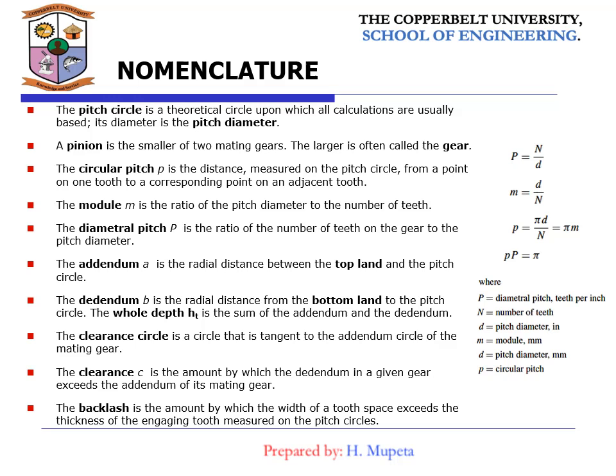The diametral pitch is the ratio of the number of teeth on the gear to the pitch diameter. The addendum is the radial distance between the top land and the pitch circle, denoted by the letter a; the dedendum is denoted by the letter b, which is the radial distance from the bottom land to the pitch circle. We also have the clearance circle, the clearance, and the backlash — the amount by which the width of the tooth space exceeds the thickness of the engaging tooth measured on the pitch circles.